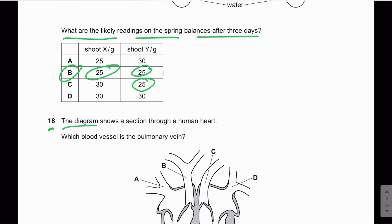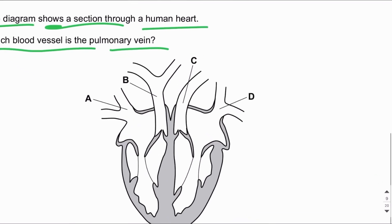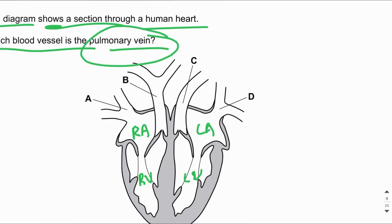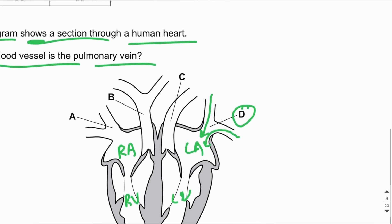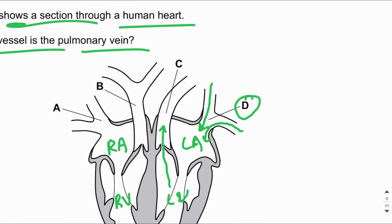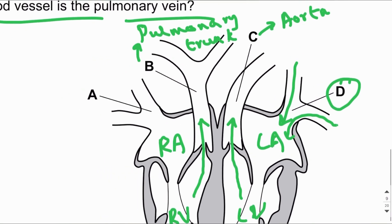MCQ number eighteen: The diagram shows a section through the human heart — which blood vessel is the pulmonary vein? The pulmonary vein carries blood from the lungs to the left atrium, so the answer is D. Vessel C is the aorta, into which blood is pumped from the left ventricle. Vessel B is the pulmonary trunk, which divides into two pulmonary arteries, carrying blood from the right ventricle. Vessel A is the vena cava, which brings blood to the right atrium.